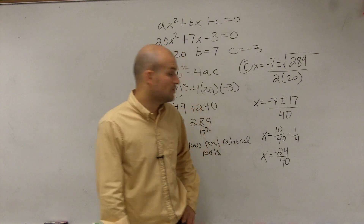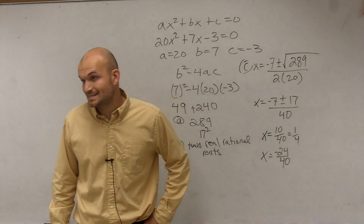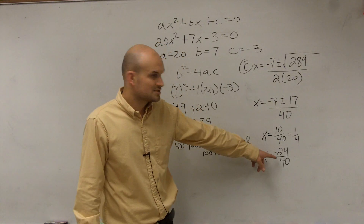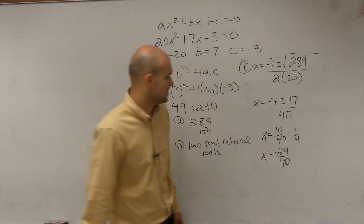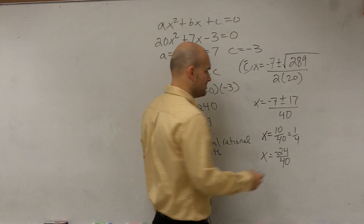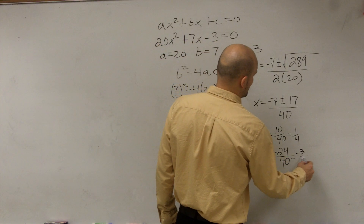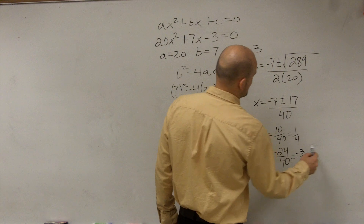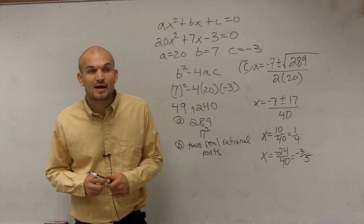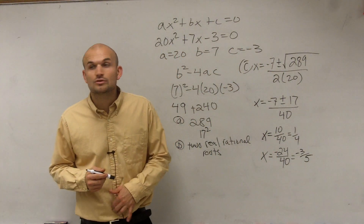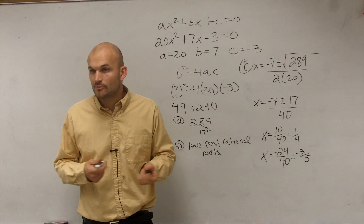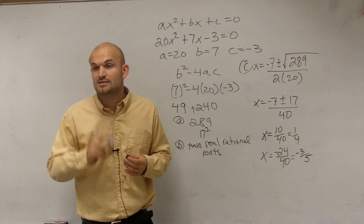The largest number that goes into both 24 and 40 would be 8. So dividing top and bottom by 8, I get negative 3 fifths. So those are going to be my two solutions to the equation, which also would be my x-intercepts, my roots, my zeros.